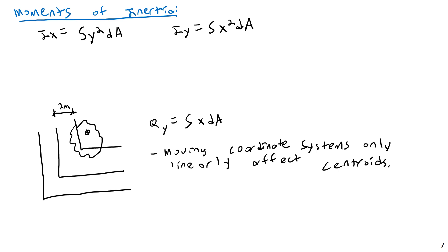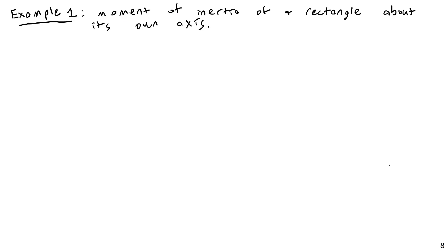But as we're going to see in example one and example two, the axis that you consider — the place that you take the moment of inertia about — is going to matter greatly for the final value of the moment of inertia of a shape.